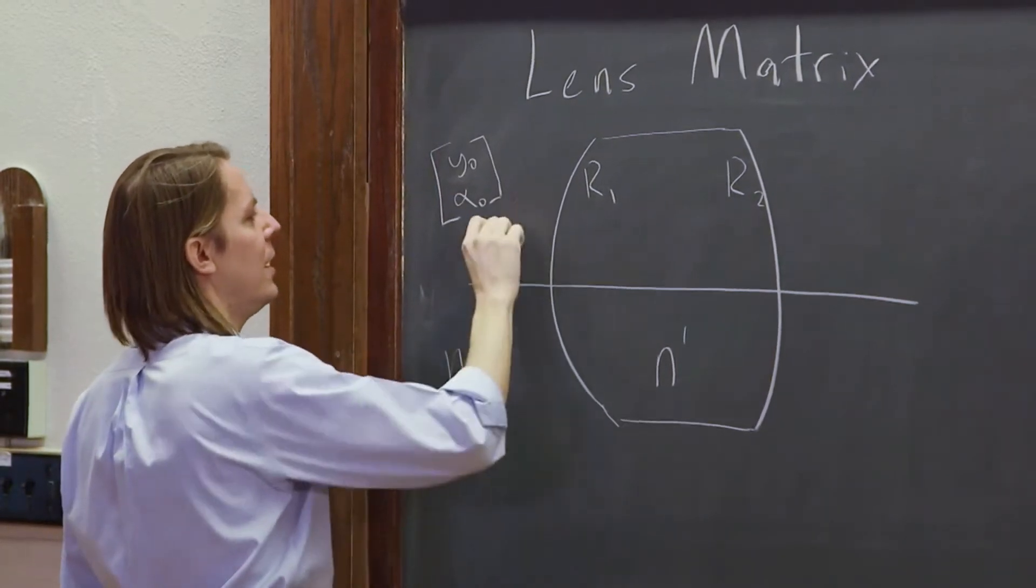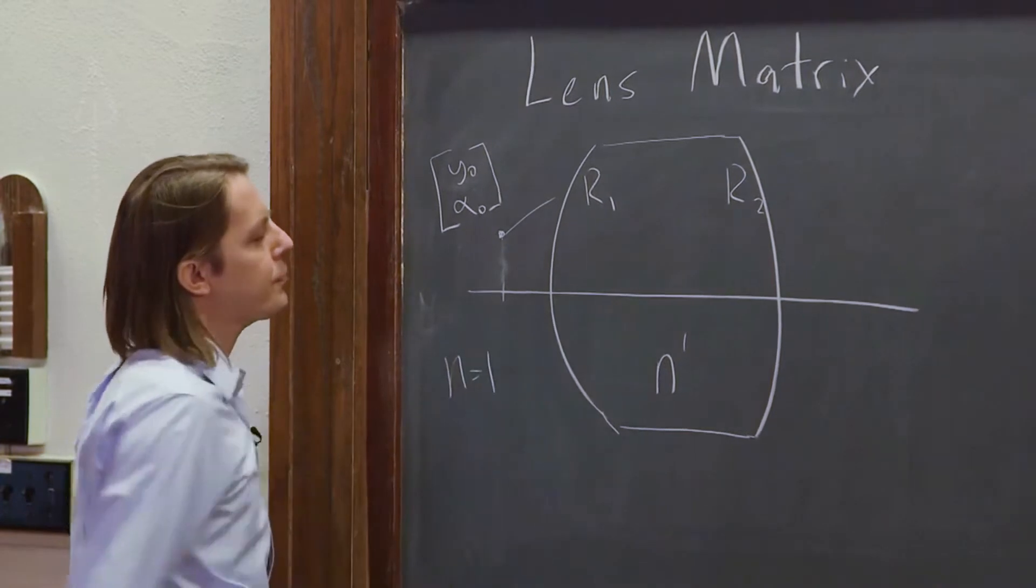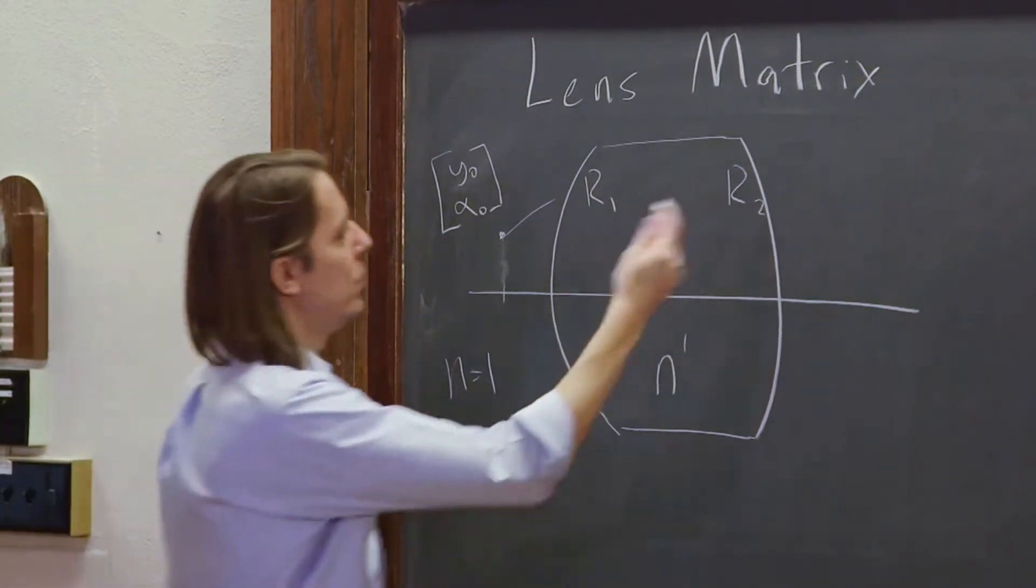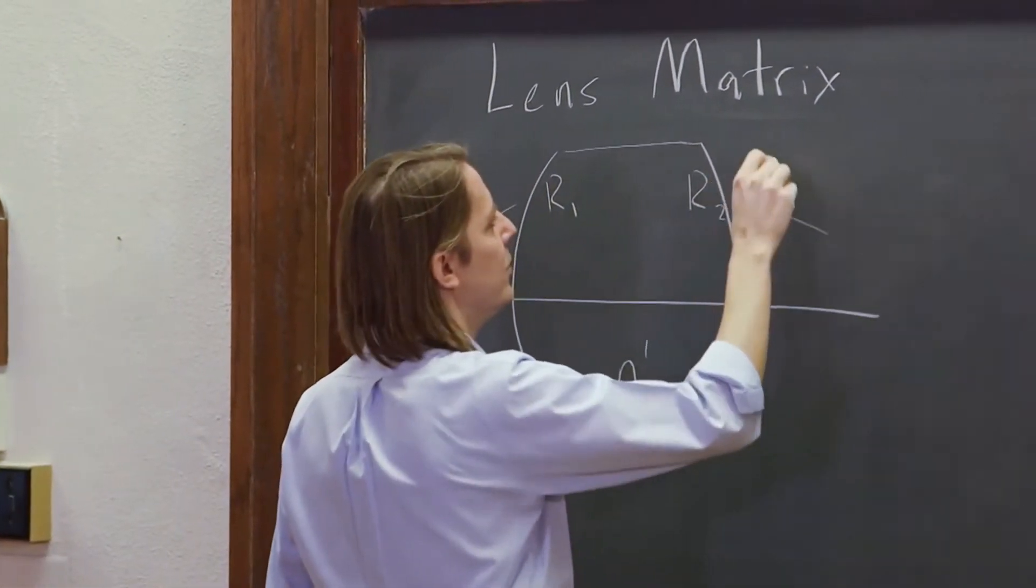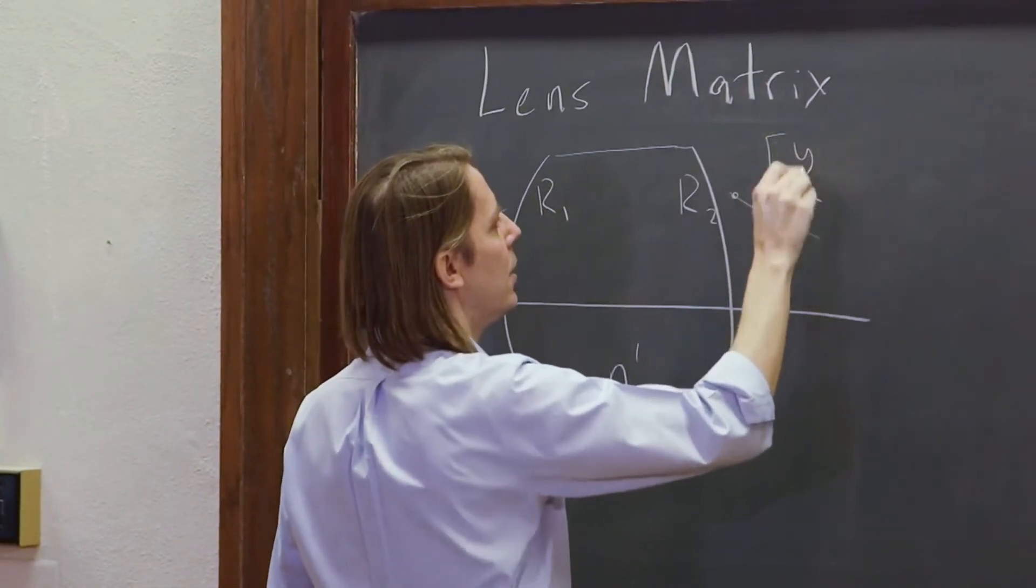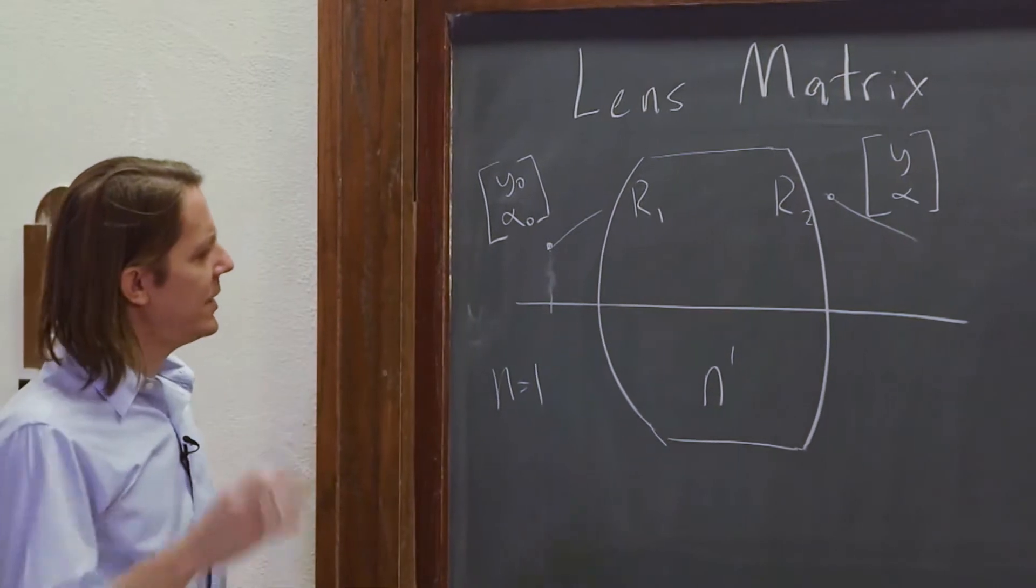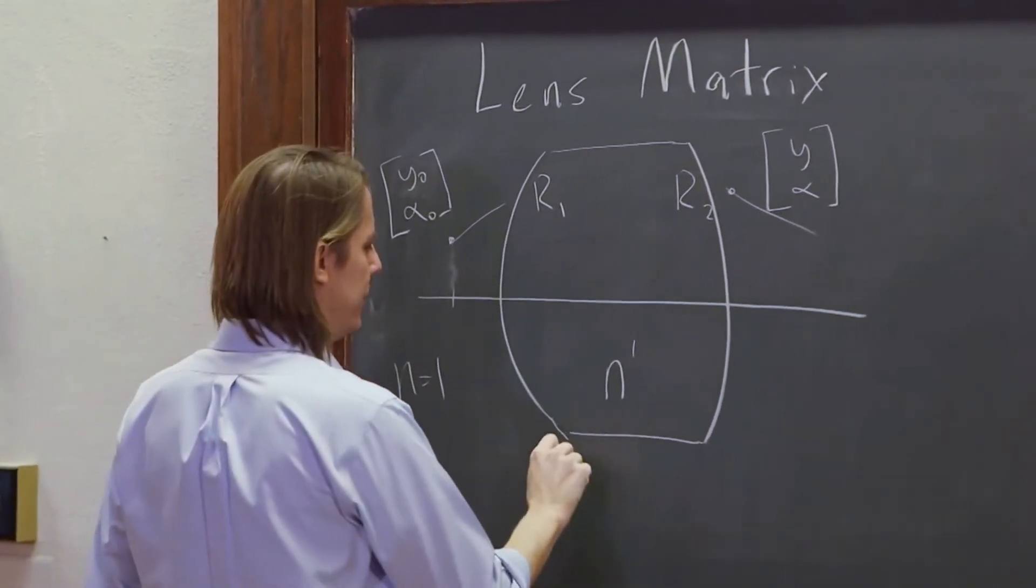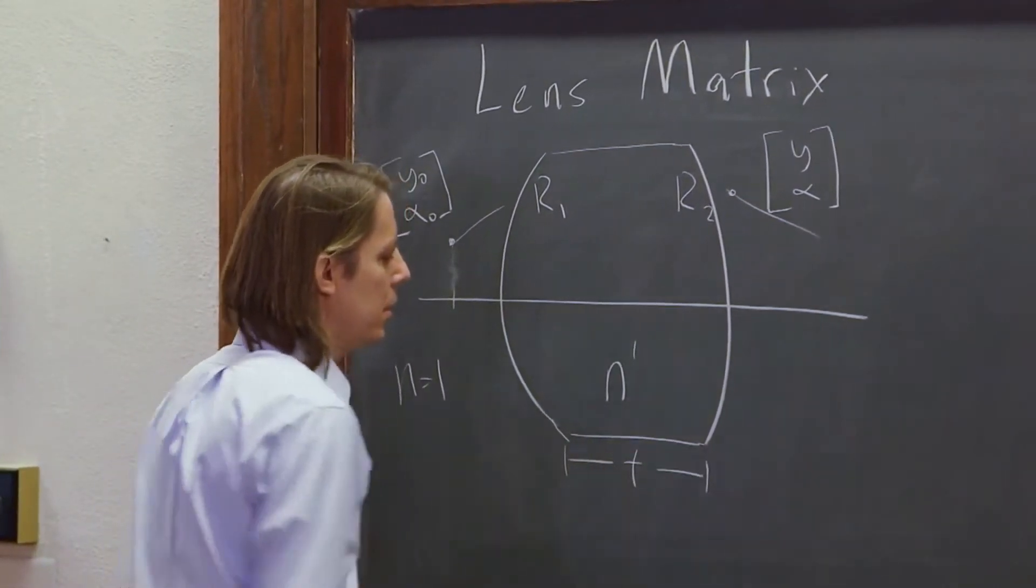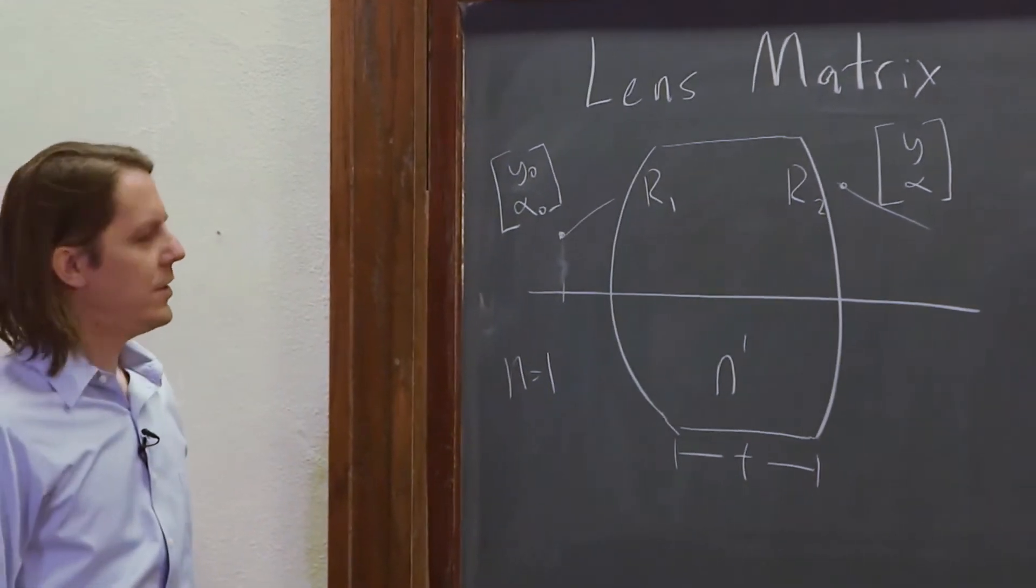It's up at a height y, it's going off at angle alpha. And we want to know what's it going to do by the time it comes out, what's it doing? We'll call it y and alpha. And we need to give the lens an actual thickness, T. So that should be everything.